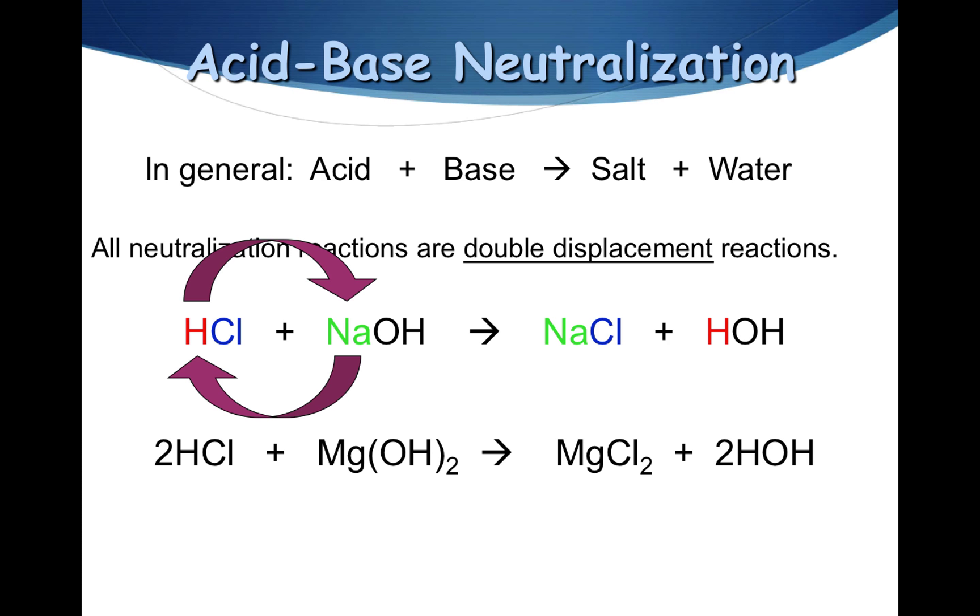Remember, a salt is just a general term for an ionic substance. Magnesium chloride is ionic. That's because magnesium is a metal, chlorine is a non-metal. Metals and non-metals form ionic bonds.